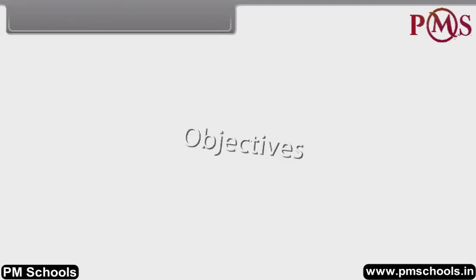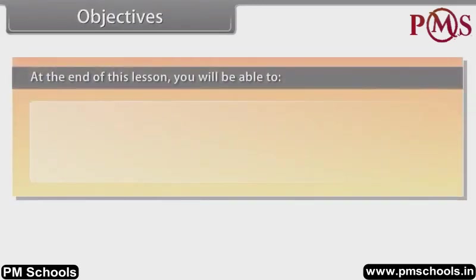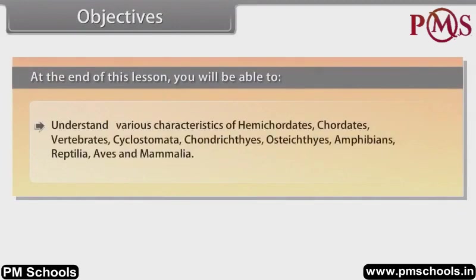Objectives. At the end of this lesson, you will be able to understand various characteristics of hemichordates, caudates, vertebrates, cyclostomata, chondrichthyes, osteichthyes, amphibians, reptilia, aves and mammalia.